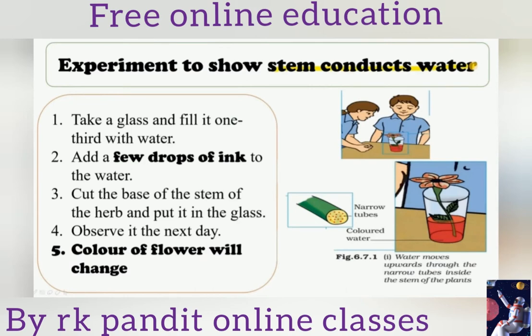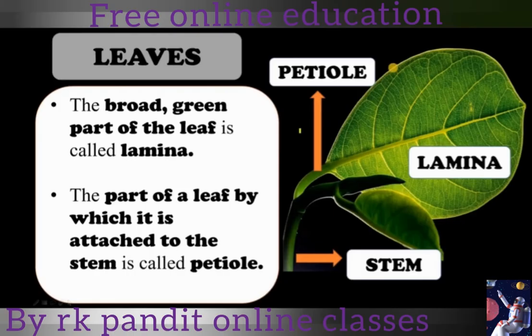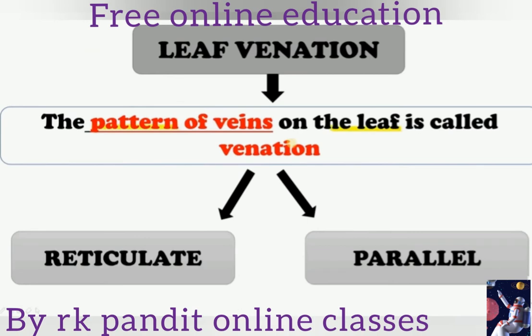We can do an experiment to show that the stem conducts water. Take a glass filled with one third water. Next, let's talk about leaves. The broad green part of the leaf is called the lamina. The part of the leaf by which it is attached to the stem is called the petiole. The small lines present on the leaf are called veins.